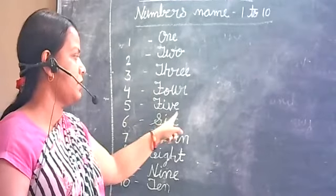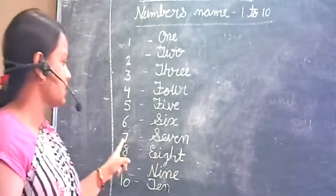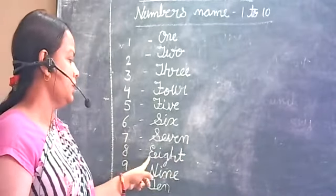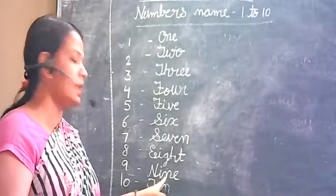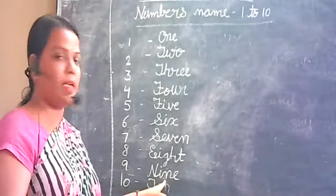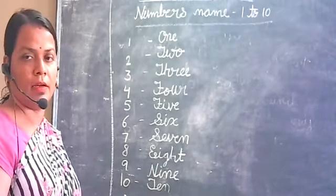S-I-X. Six. S-E-V-E-N. Seven. E-I-G-H-T. Eight. N-I-N-E. Nine. T-E-N. Ten. Okay. Next topic is addition.